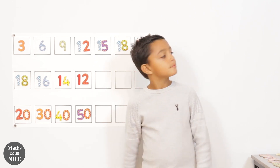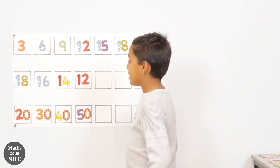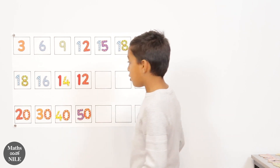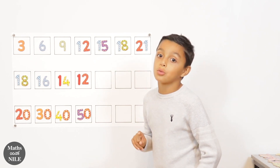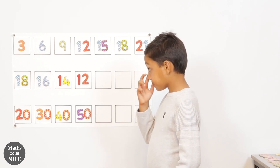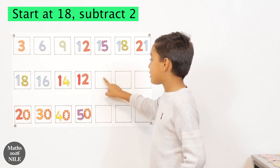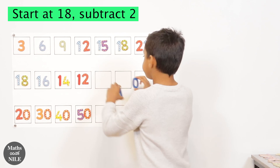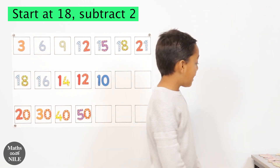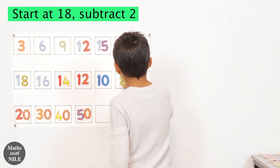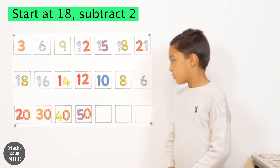Let's have a look at the second sequence. Eighteen, sixteen, fourteen, twelve — it's definitely going down in twos, and it started at eighteen. So eighteen, sixteen, fourteen, twelve, ten. Why is it ten? Because twelve take away two is ten. And then eight, and then six. Good job.